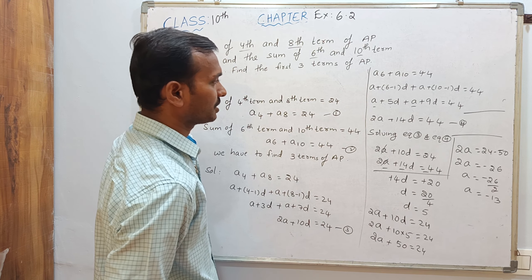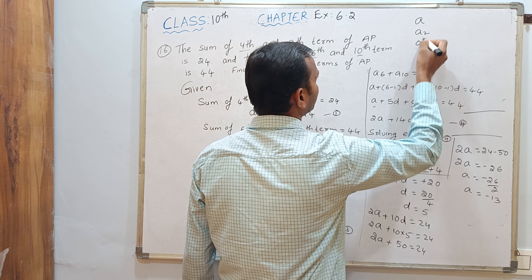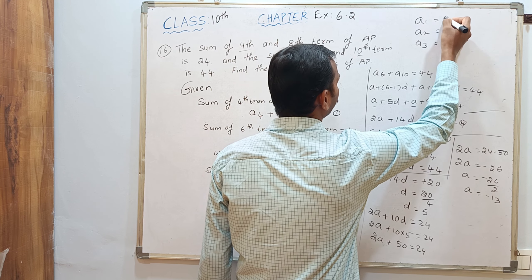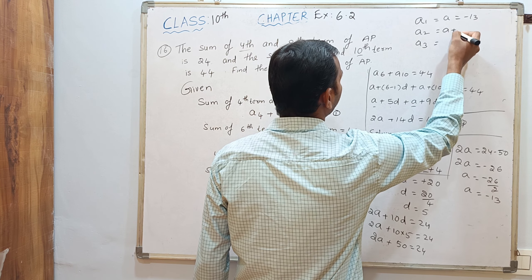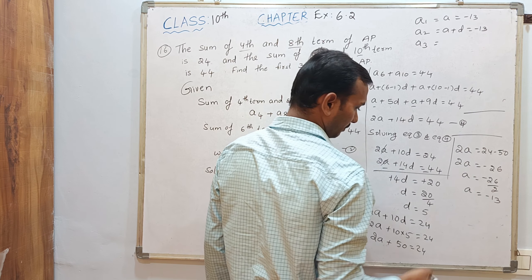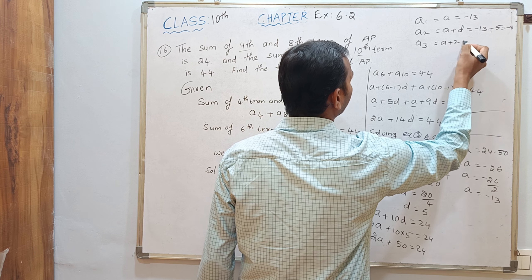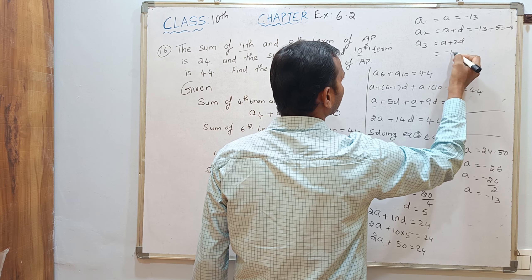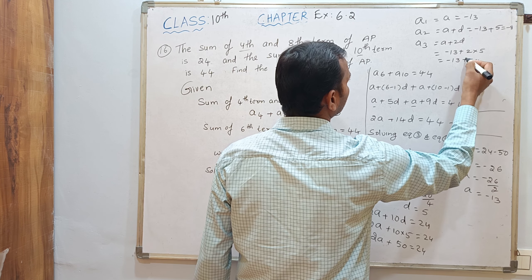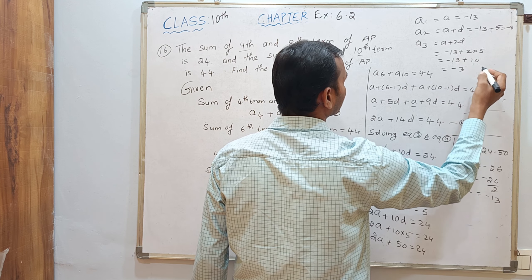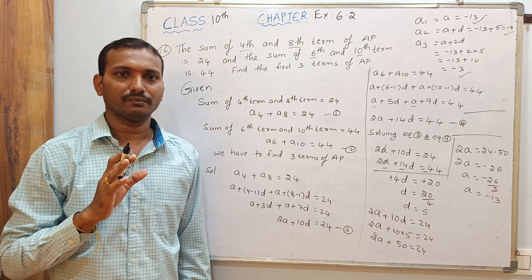He was asking to write the first three terms: A1, A2, A3. A1 is the first term A itself, that is minus 13. A2 is A plus D, which is minus 13 plus 5, that is minus 8. A3 is A plus 2D, which is minus 13 plus 10, that is minus 3. So these are the first three terms of the AP series.